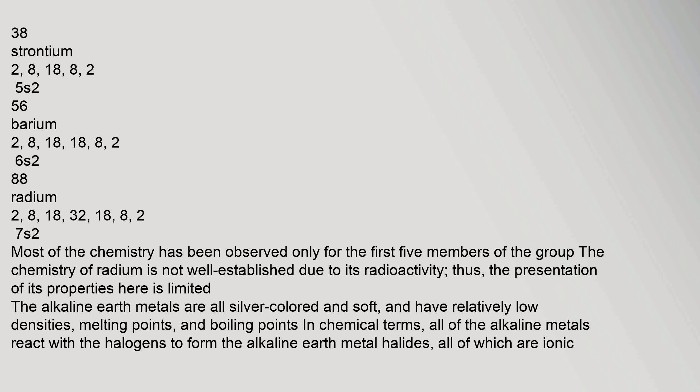The alkaline earth metals are all silver-colored and soft, and have relatively low densities, melting points, and boiling points. In chemical terms, all of the alkaline earth metals react with the halogens to form the alkaline earth metal halides.